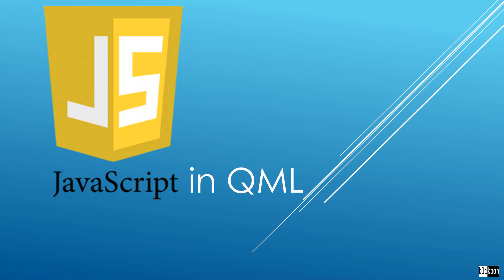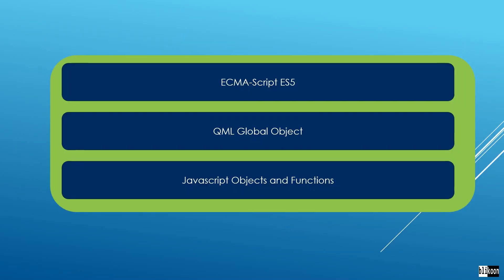In this lecture we are going to talk about the JavaScript environment in QML. JavaScript is a first-class citizen in QML code. It has a lot of similarities with JavaScript environments you see in things like browsers and Node.js, but it also has some things that are special to the QML environment. It implements ECMAScript ES5, which is a standard implemented in most modern browsers like Firefox, Chrome, and Safari, giving you access to familiar JavaScript objects like Math and many others.